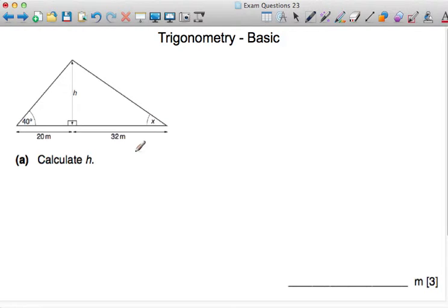Let's remind ourselves of the three trigonometric ratios which you have to learn. Sine is opposite over hypotenuse, cosine is adjacent over hypotenuse, and tangent is opposite over adjacent.